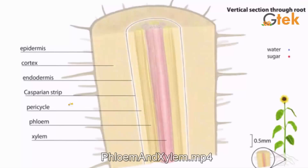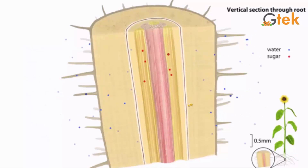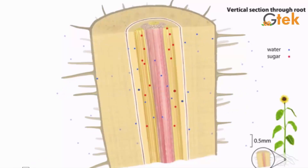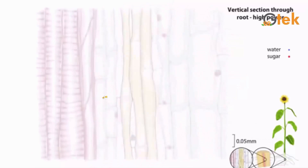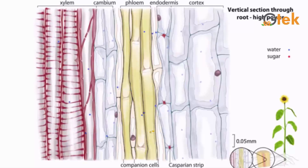Let us see about xylem and phloem. This is the vertical section throughout the root — it contains phloem and xylem. Here you can see how water and sugar molecules are transferred into the root. In high power, you can see xylem, cambium, phloem, endodermis, and cortex. This part is the companion cells.